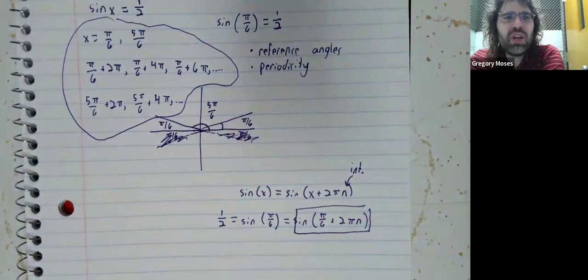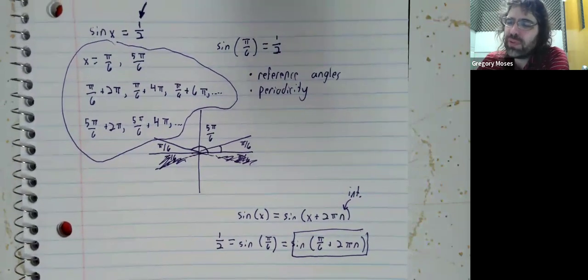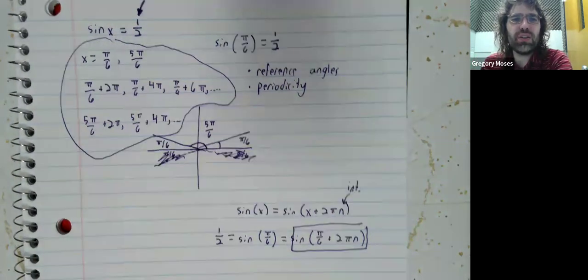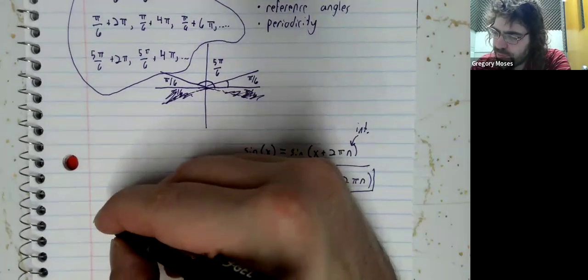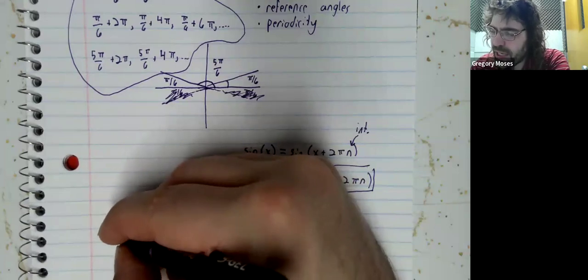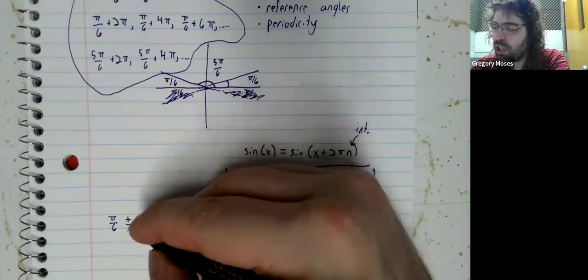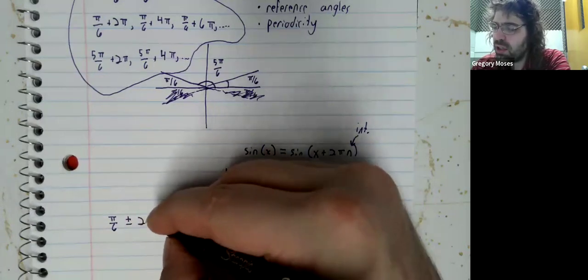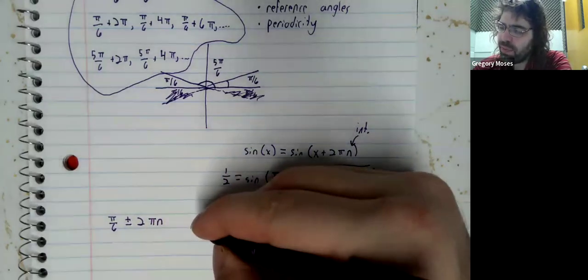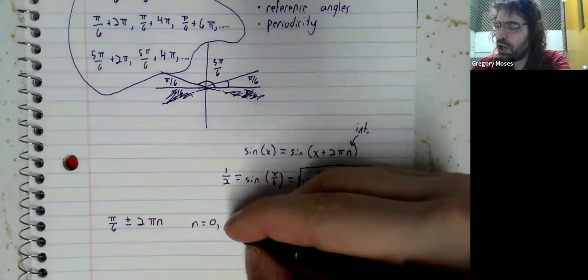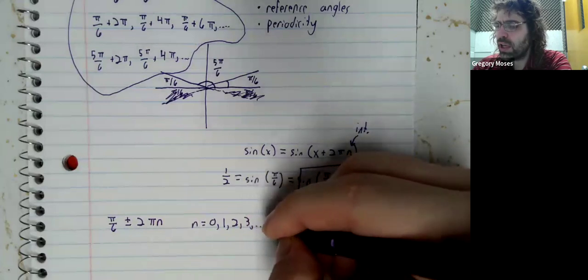So, we wind up with an infinite number of solutions to this equation. But, we can write them down compactly. There are pi over six plus 2 pi n, where n can be 0, 1, 2, etc.